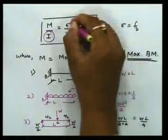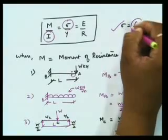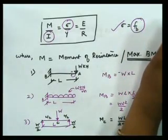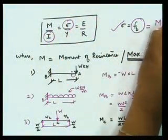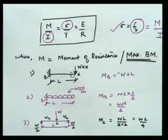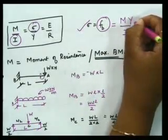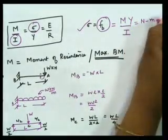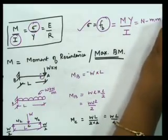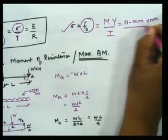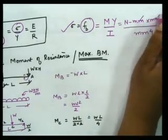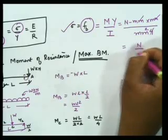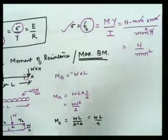Sigma, also written as fb, is the bending stress. To find fb: fb = My/I. The unit of M is N·mm, the unit of y is mm, and the unit of I is mm⁴. The mm cancels, so the unit of bending stress is N/mm².